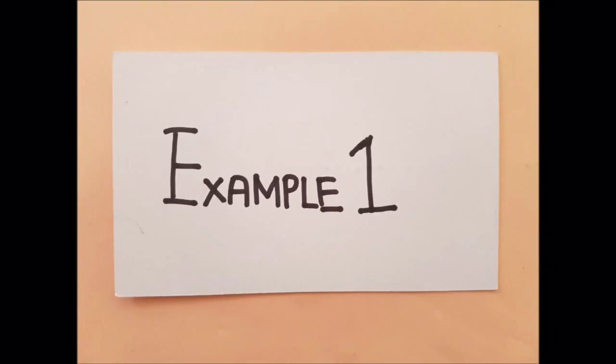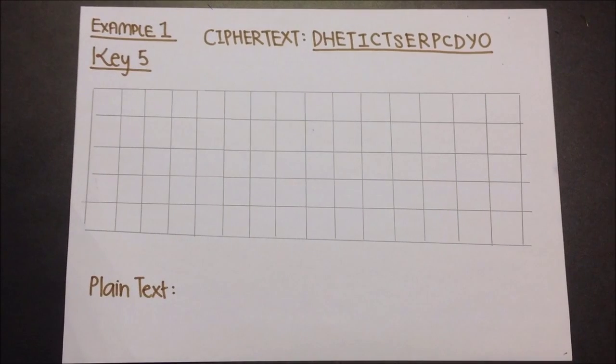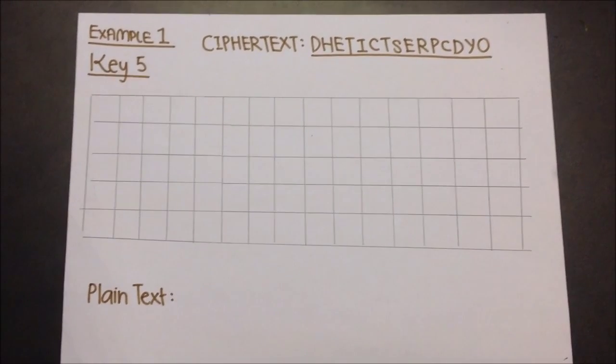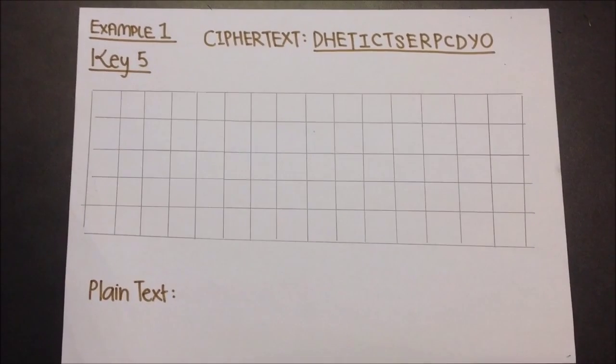Now, let's take a look at a few examples. In the first example, the cipher text is shown above. As I explained, the first step in decryption is to come up with the grid.